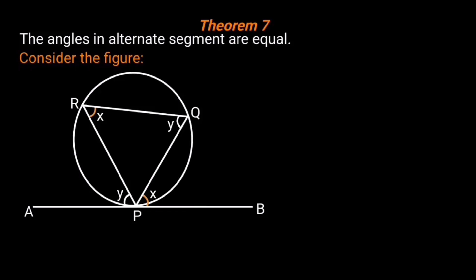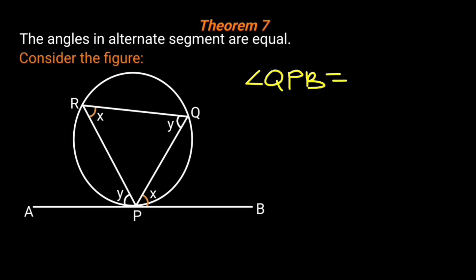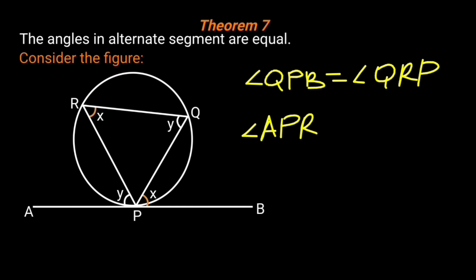Circle geometry, Theorem 7: The angles in the alternate segment are equal. For any circle, the angle formed between the tangent and the chord at their point of contact is equal to the angle formed by the chord in the alternate segment. The chord PQ divides the circle into two segments, and tangent AB touches the circle at P. Hence angle QPB equals the angle in the alternate segment, angle QRP. Also, angle APR equals angle RQP in the alternate segment.